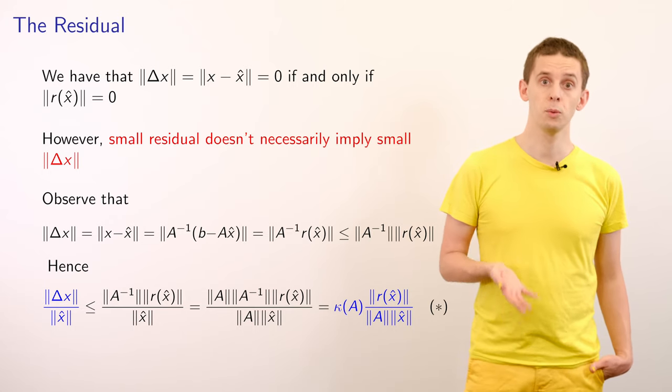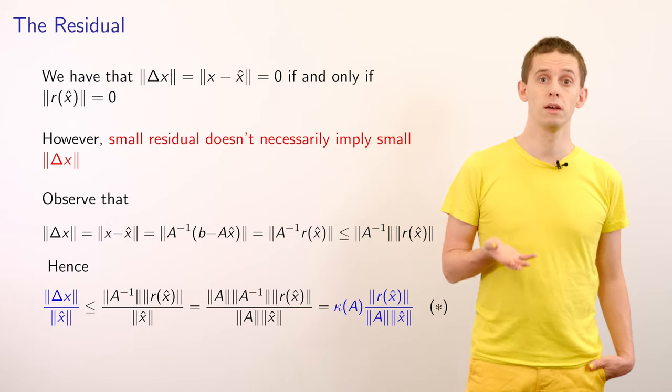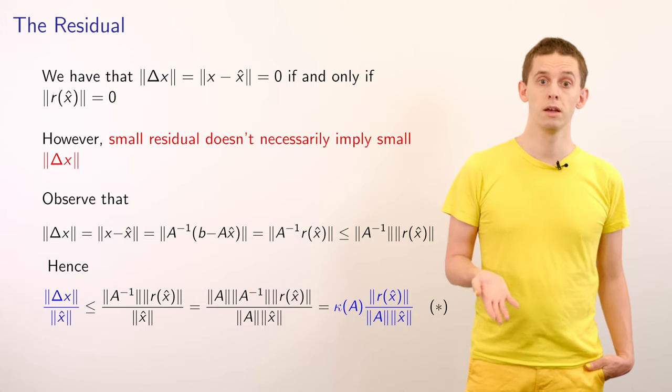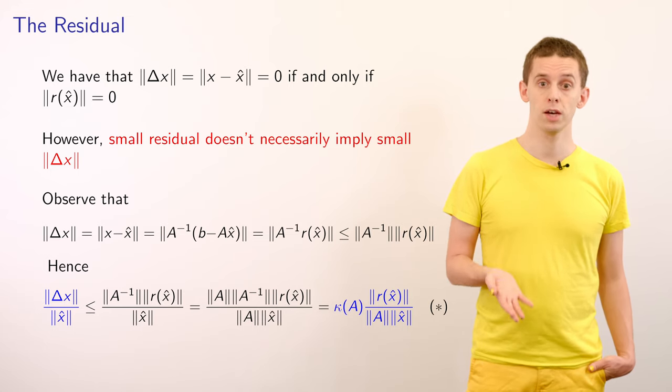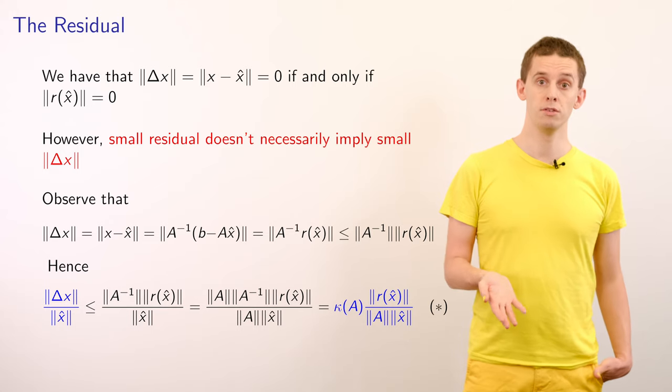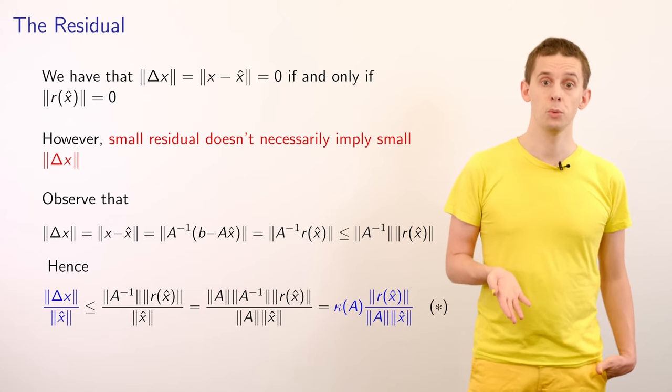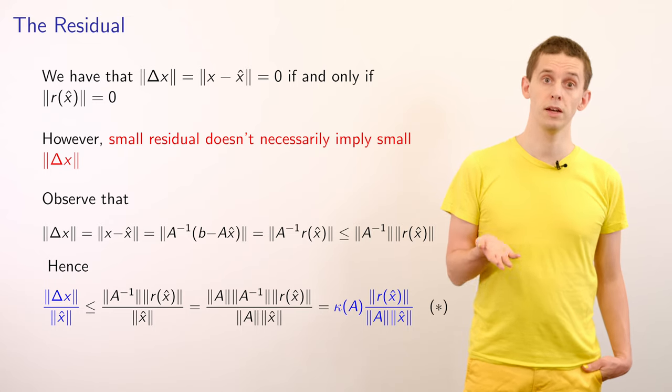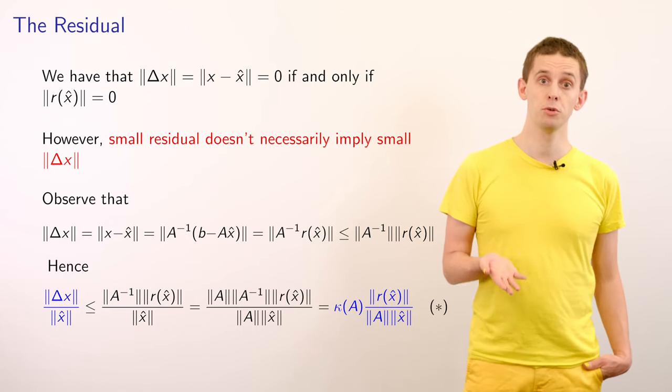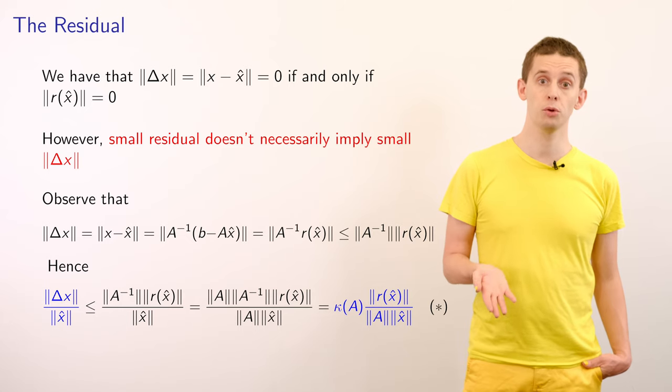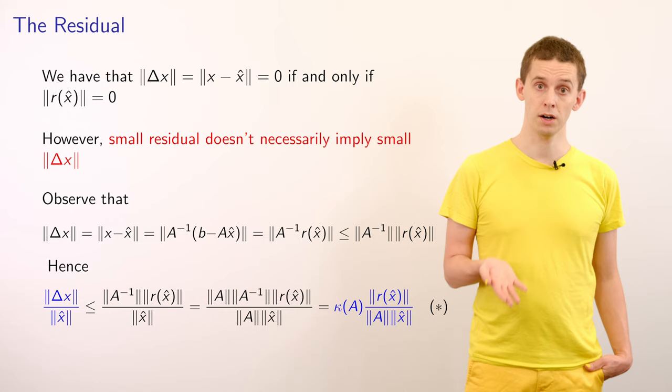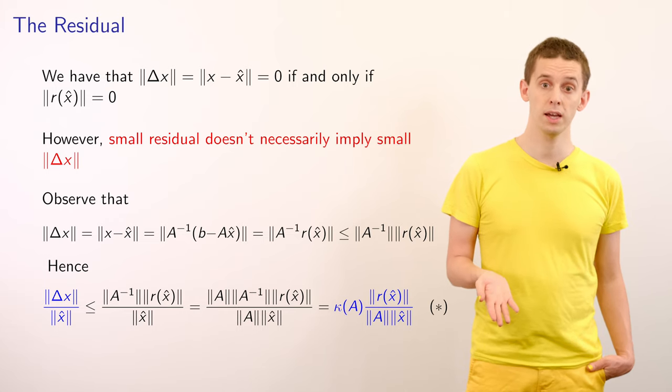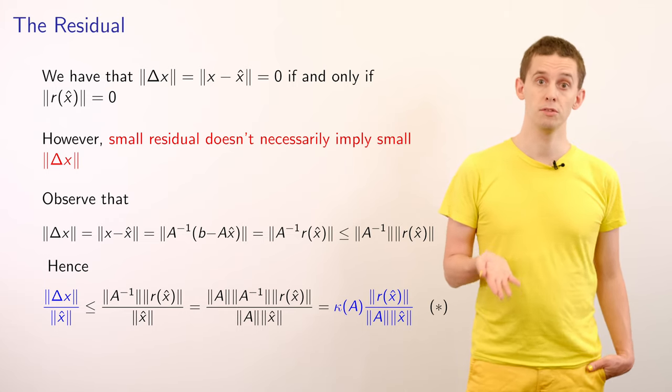So from here we could write down that the norm of Δx divided by the norm of x̂ is less than or equal to the norm of A inverse times the norm of r(x̂) divided by the norm of x̂. And we can introduce factors of the norm of A in the numerator and denominator, and then combine two terms. Together this will be equal to the condition number of A times the norm of r(x̂) divided by the norm of A times the norm of x̂.